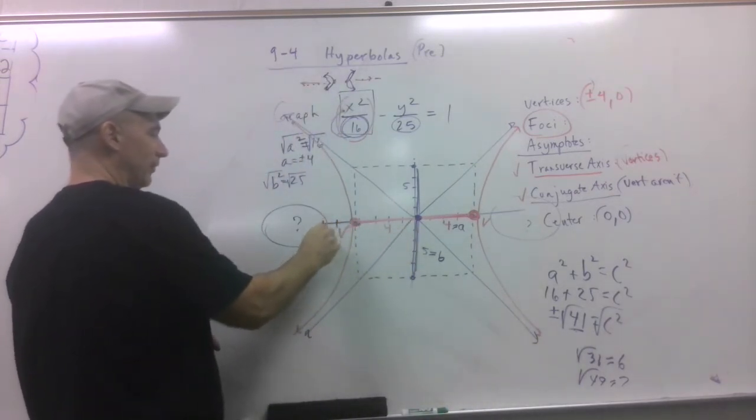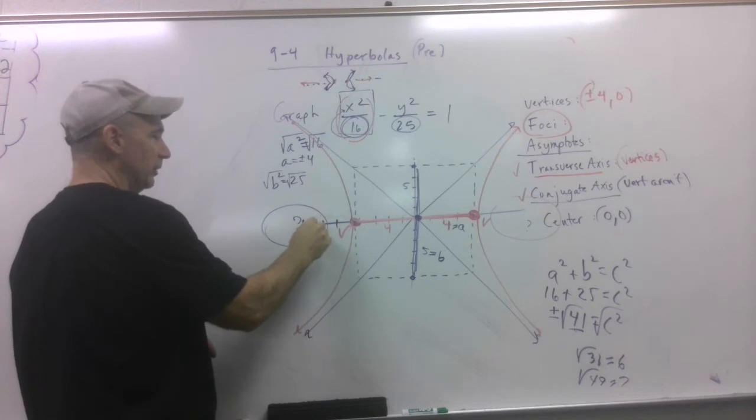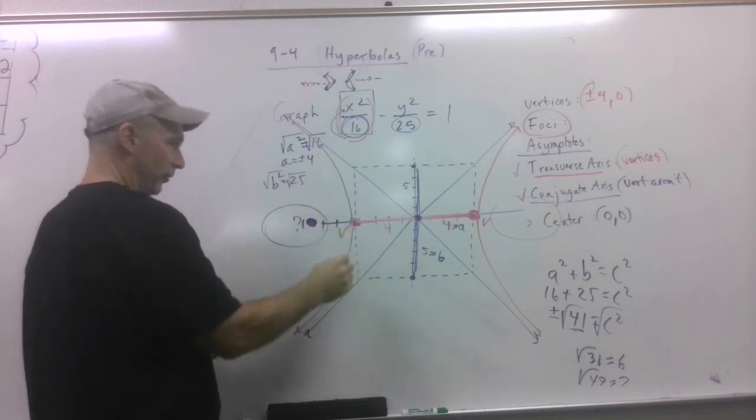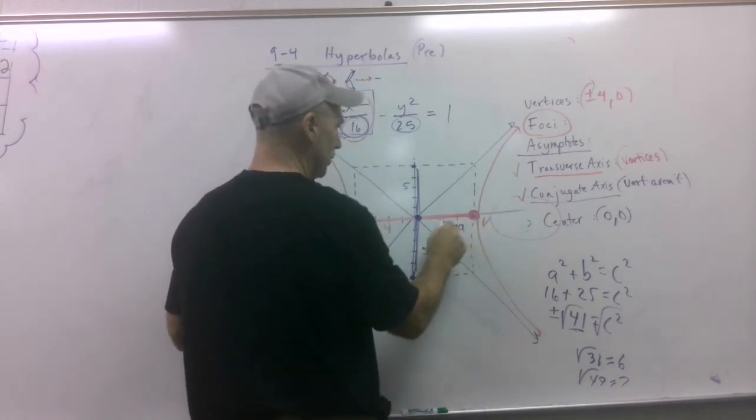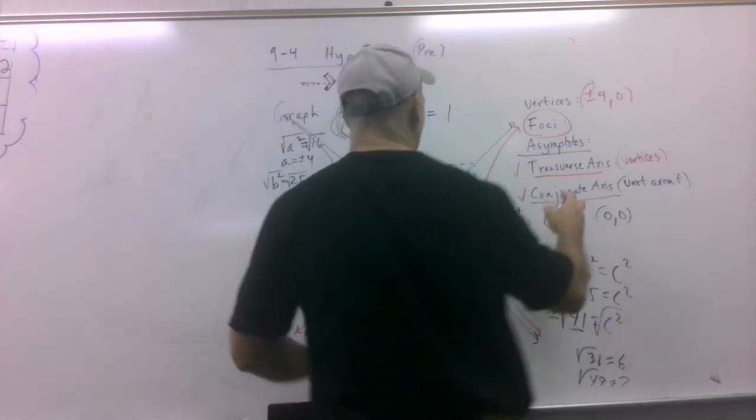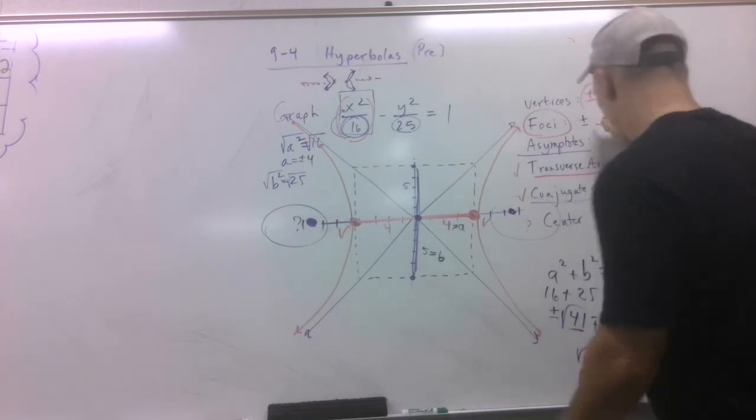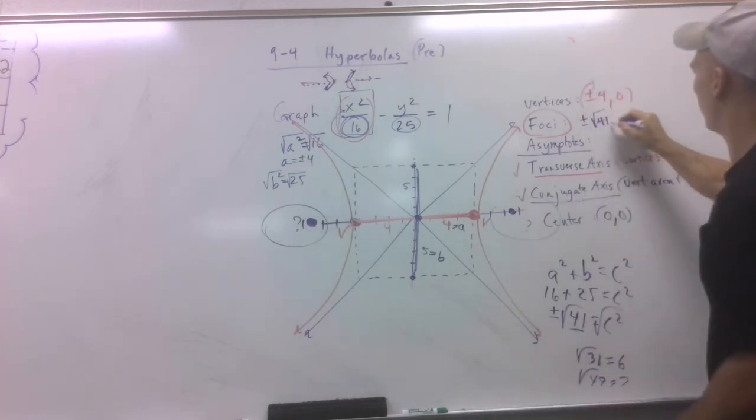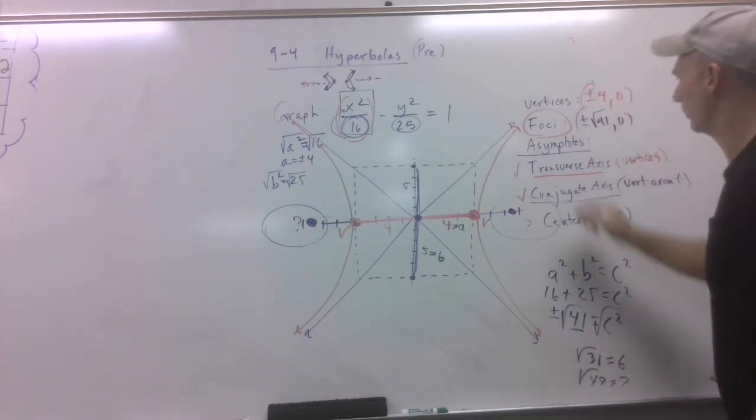But this is 4. Then I go 5, 6, 7. It's right in here. There's a focus. I do the same thing. 4, 5, 6, 7. It's right about in here. So where are my foci? Plus or minus the square root of 41, 0.